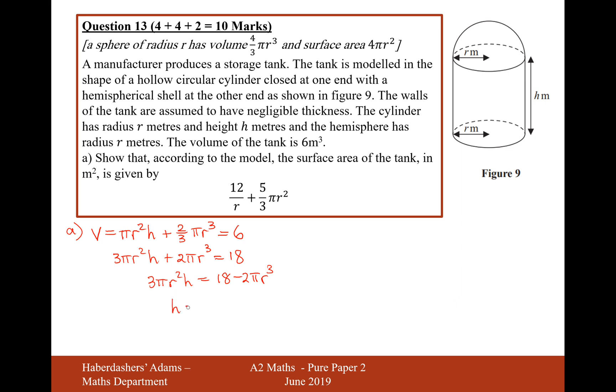It's going to be h equals 18 minus 2 pi r cubed over 3 pi r squared. And it looks tempting to simplify this fraction a little bit, but it is not possible to simplify that fraction.